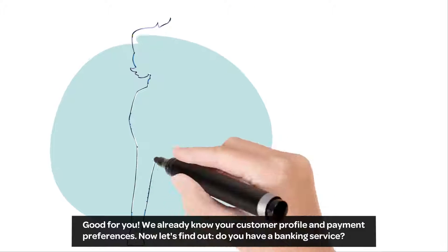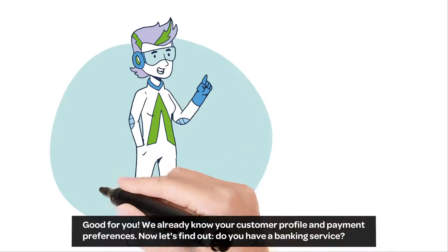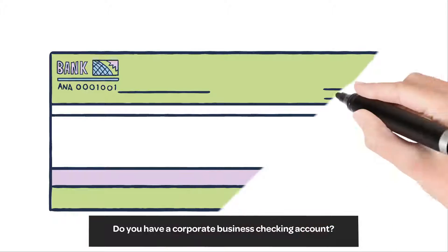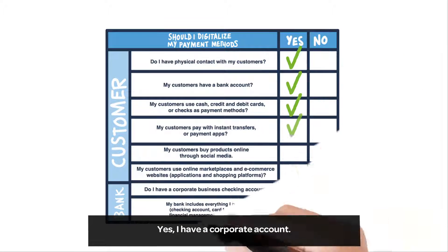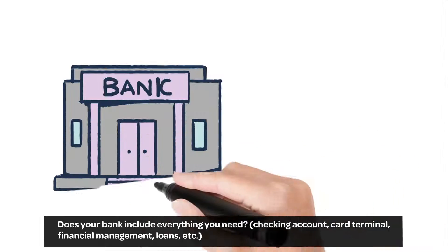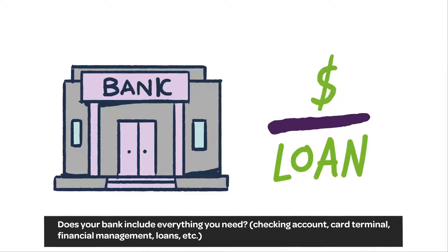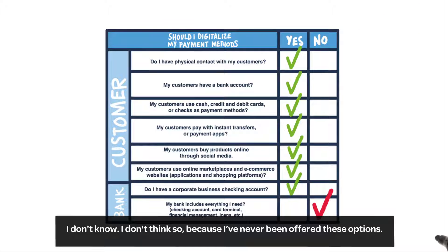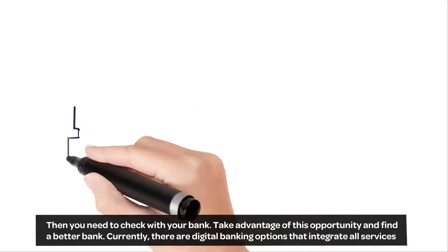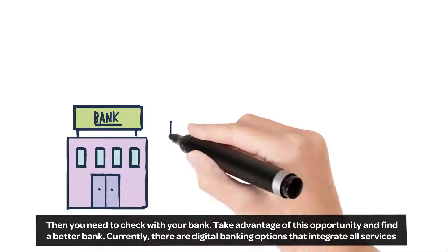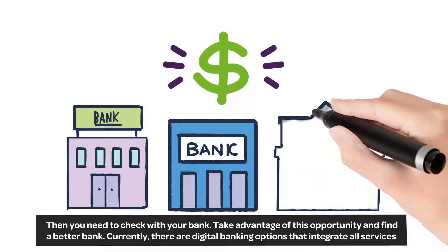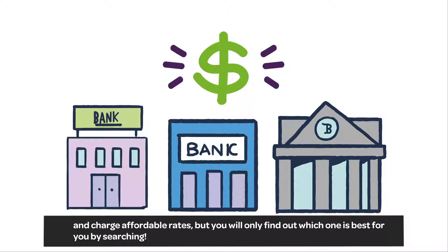Good for you. We already know your customer profile and payment preferences. Now let's find out: do you have a banking service? Do you have a corporate business checking account? Yes, I have a corporate account. Does your bank include everything you need — checking account, card terminal, financial management, loans, etc.? I don't know, I don't think so, because I've never been offered these options. Then you need to check with your bank. Take advantage of this opportunity and find a better bank. Currently there are digital banking options that integrate all services and charge affordable rates, but you will only find out which one is best for you by searching.